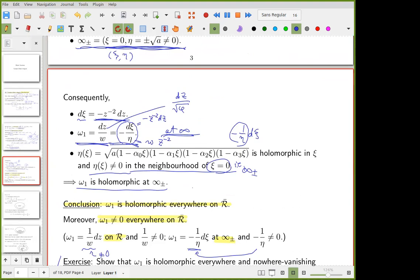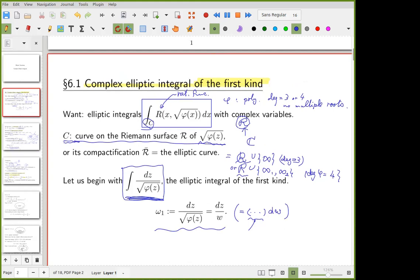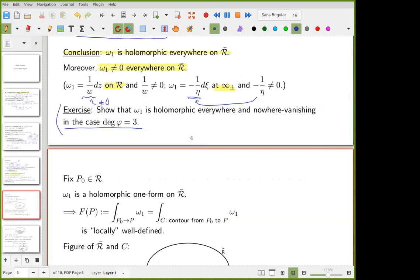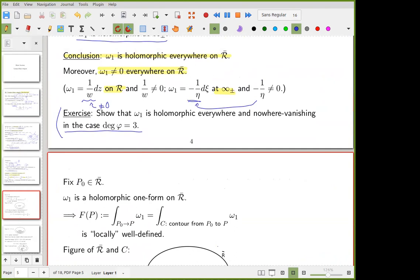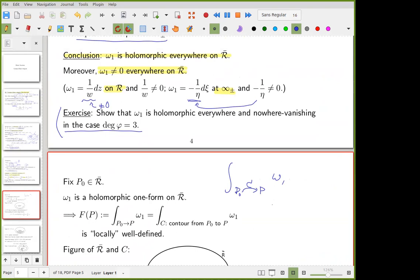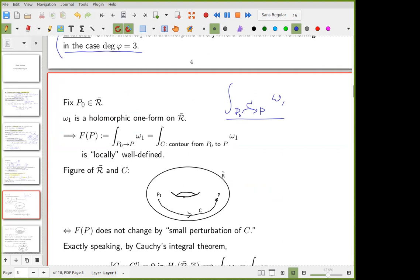So this is the elliptic integral of the first kind. And since this is a holomorphic one-form, an integral along a curve connecting p0 and p does not depend on this contour because of Cauchy's theorem.